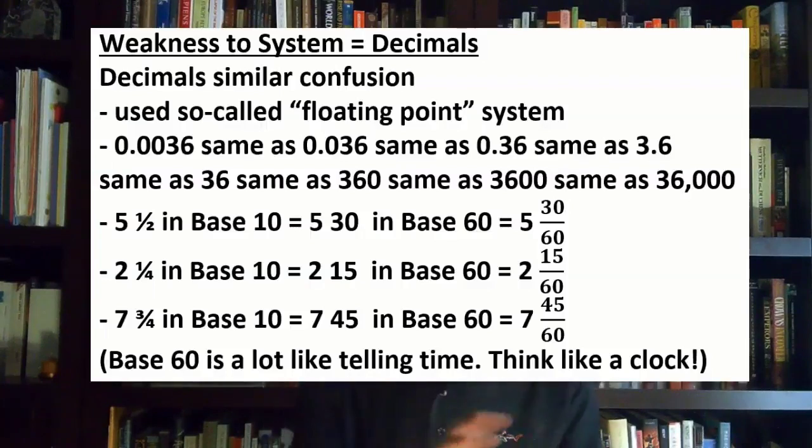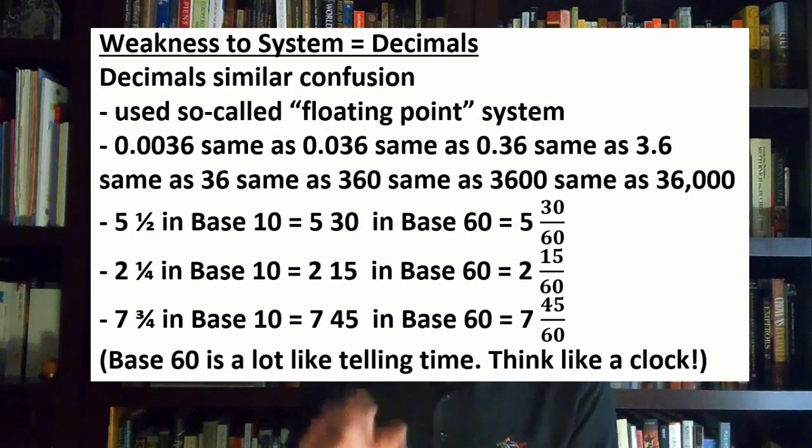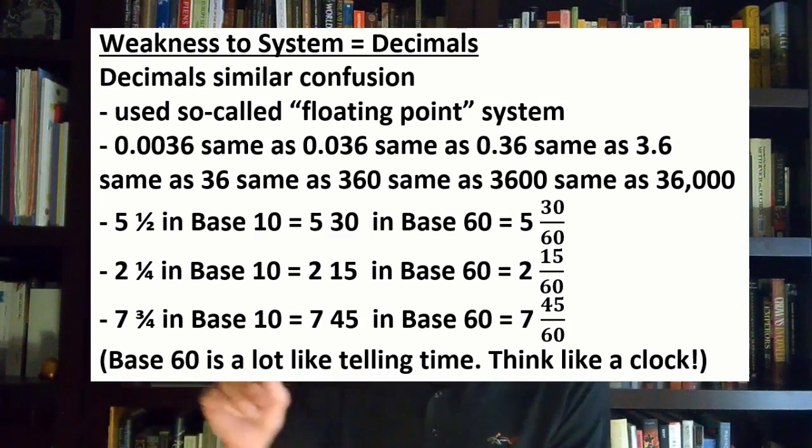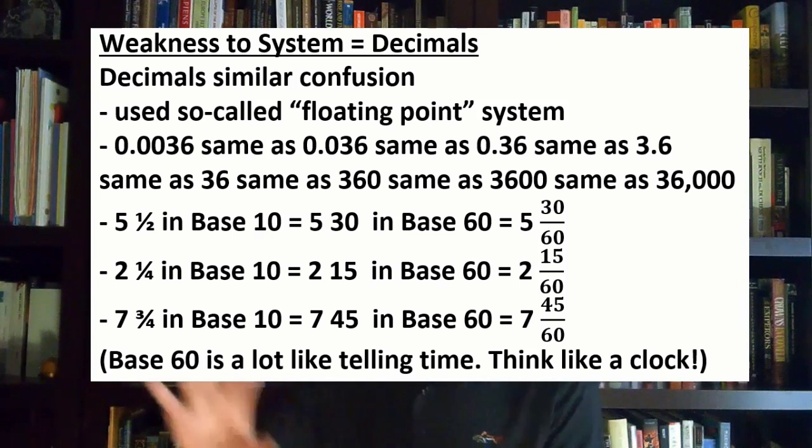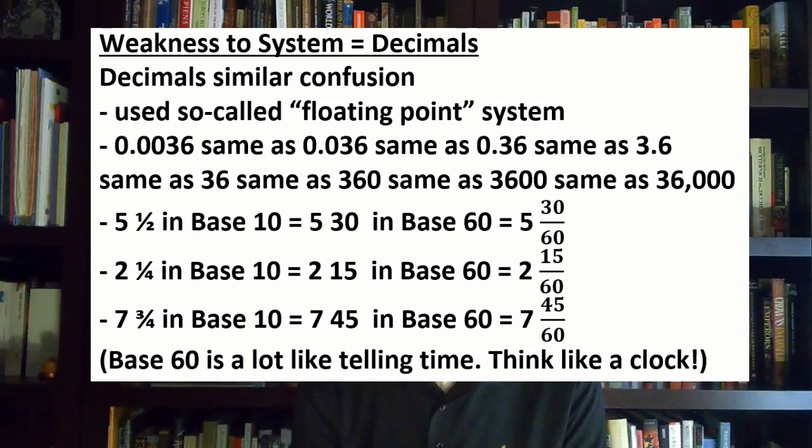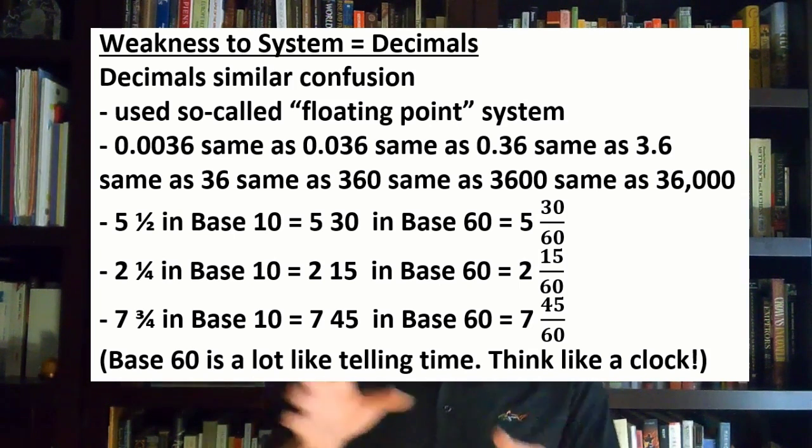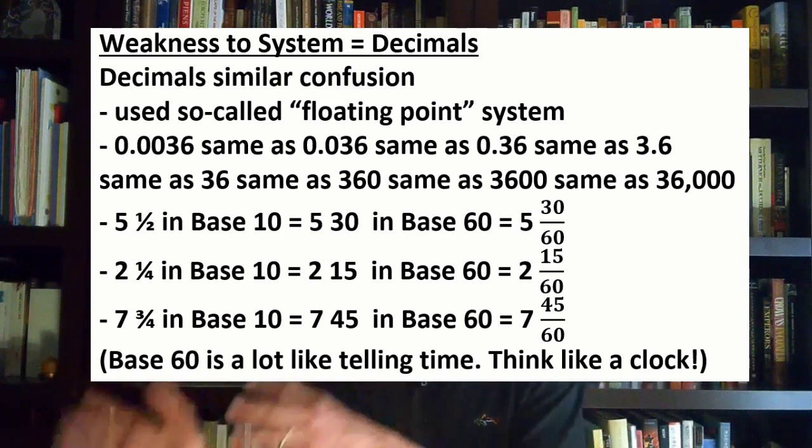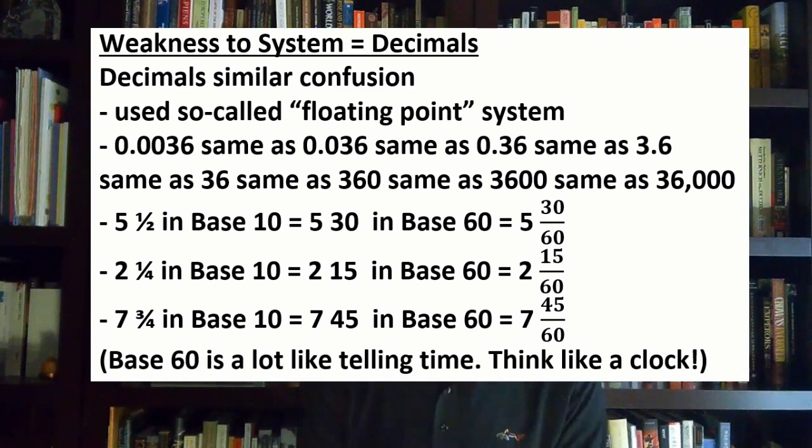Let's move to another weakness. Decimals can cause a similar confusion in their system. They use what we would call a floating point system. Similar to how you had to know where the zero was, the decimal is the same way. So .0036 would be written the same as .036, that would be written the same as .36, and that would be written the same as 3.6, or even 36. You really have to know, in context, where your decimal place would be.